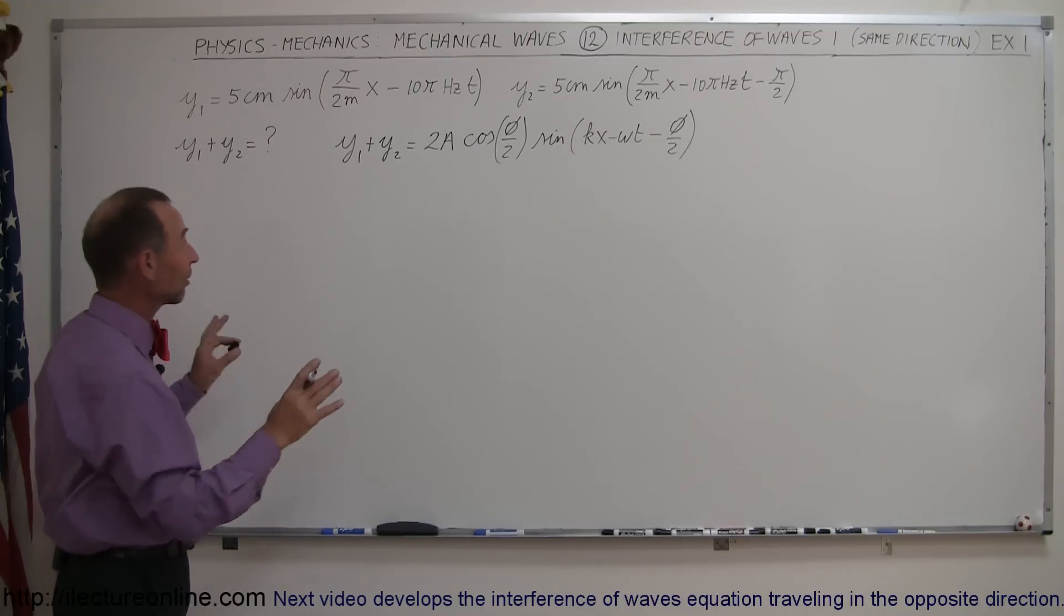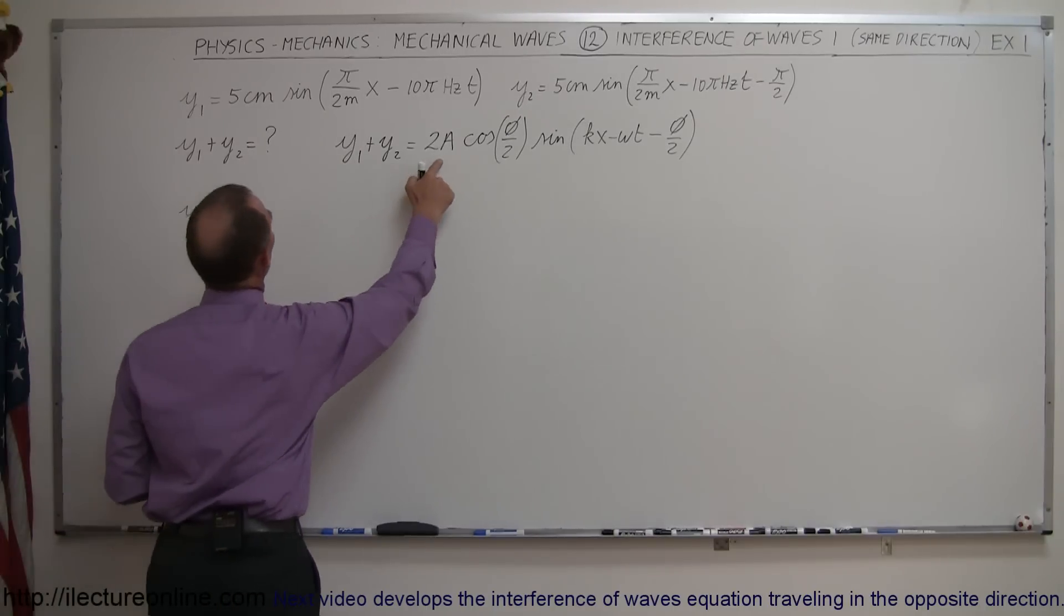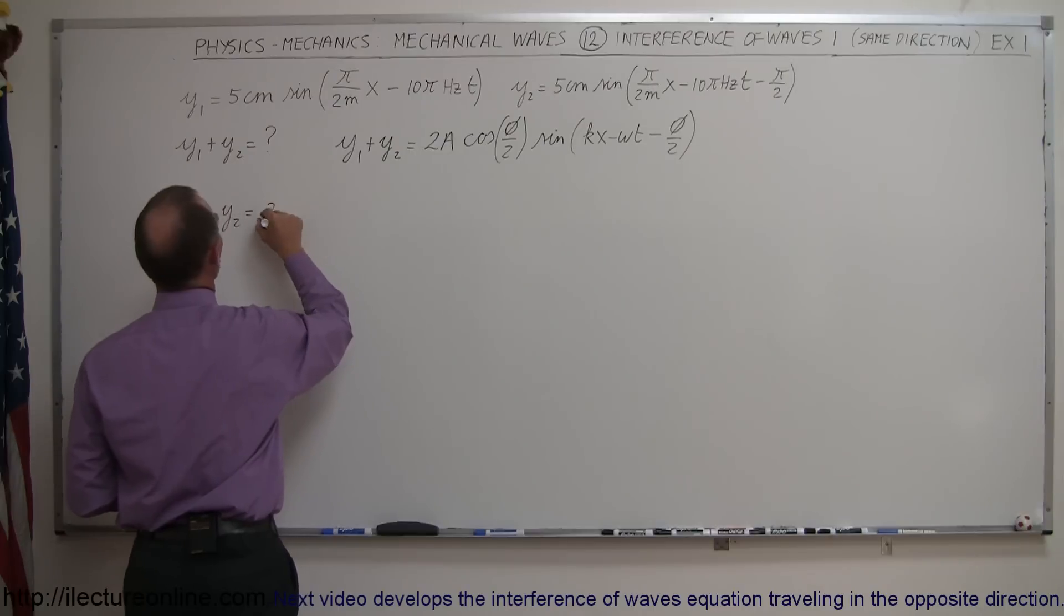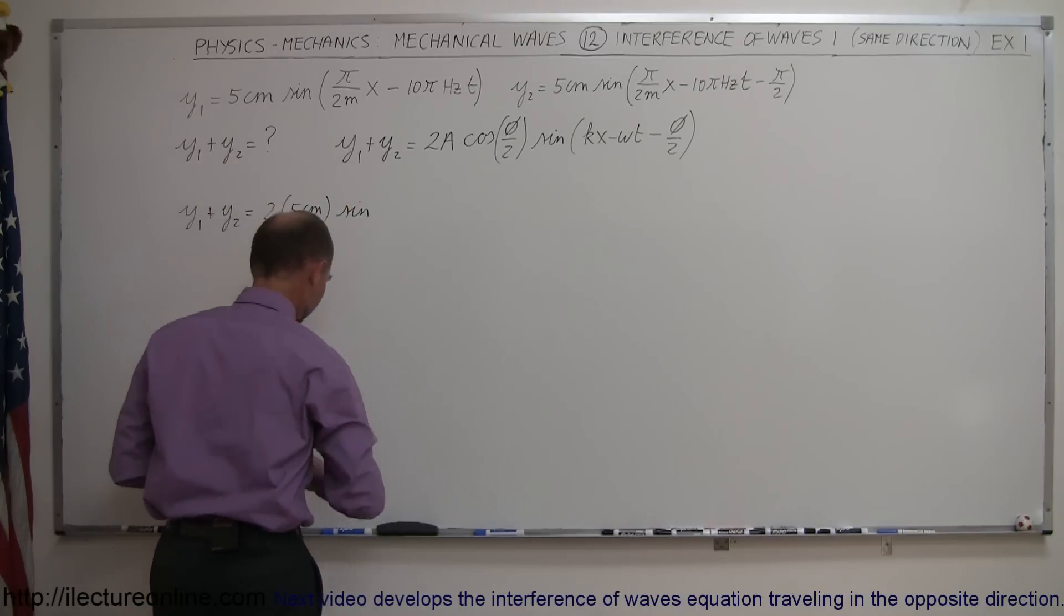Alright, so now that we know that, let's plug everything that we know. Therefore we can say that y1 plus y2 is equal to twice the amplitude, so 2 times 5 centimeters times the sine of, oh let's see, we wrote the cosine first, right.